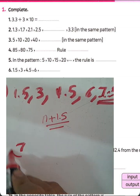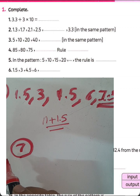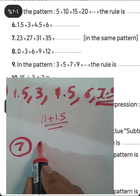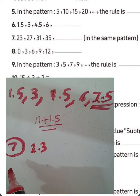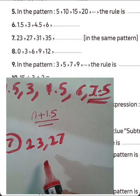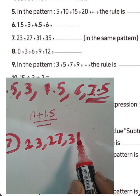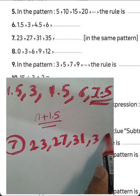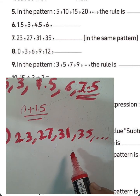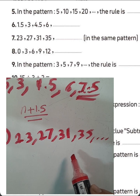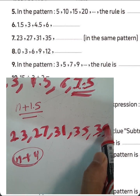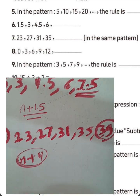Question number 7. We have 23, 27, 31, 35, and so on. In this example, it increases by 4. Then the rule is N plus 4. 35 plus 4 equals 39. Write 39 in the space.